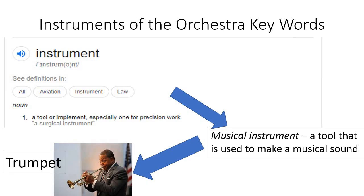Let's have a look at a few key words that we might not know. First of all, what is an instrument? An instrument, according to the dictionary, is a tool or an implement, especially one used for precision work — so a surgical instrument is something you use to perform surgery. If we use the term musical instrument, it might sound really obvious, but a musical instrument is a tool that is used to make a musical sound. For example, a trumpet is an instrument because it is a tool to make a sound like this.